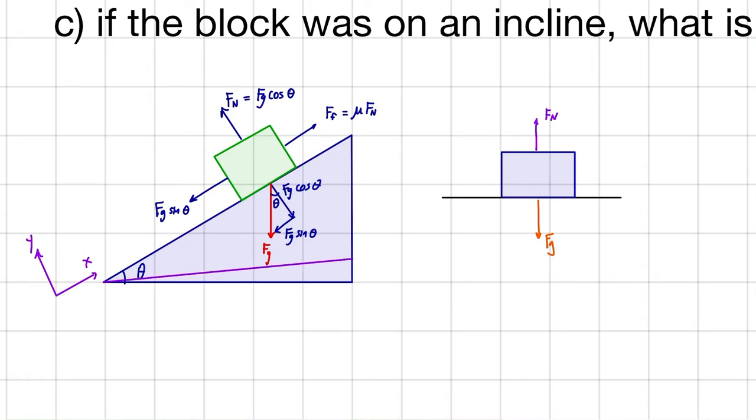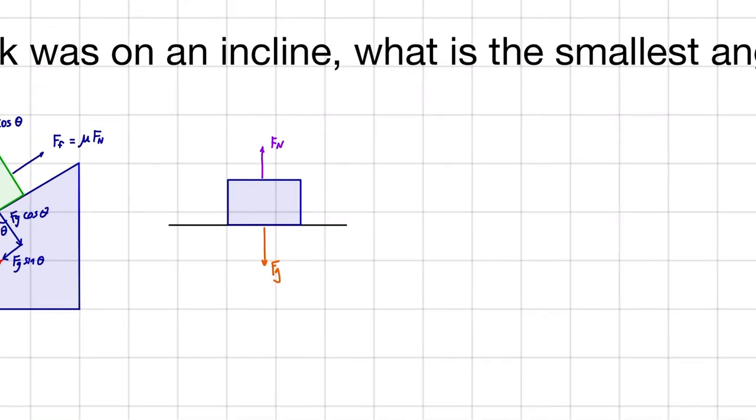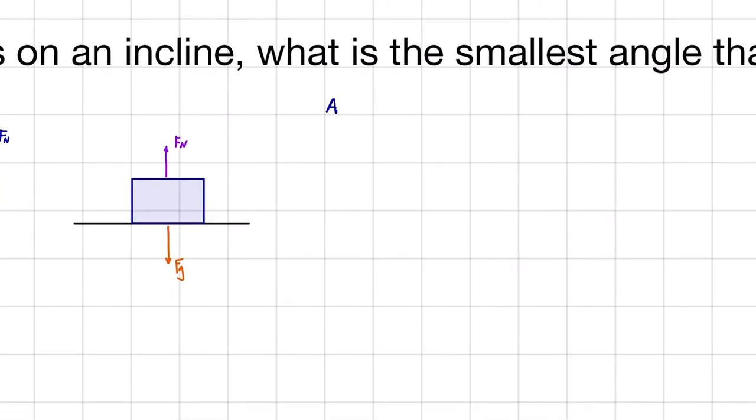We're going to have this kind of a ramp, and if we have it too flat, well, the block's not going to move. But if we make it a steep ramp, well, of course the block's just going to slide off of it. So what's the critical angle which we can raise the ramp to, which causes the block to start to slide down? That's what we want to know.